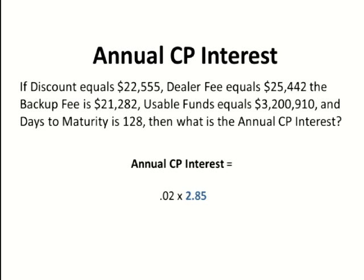We'll combine that to get 2.85, then multiply these two numbers together, and your annual commercial paper interest rate is 6.2%. That is the percentage based on the fees you're going to pay and the amount you're going to receive for the time period you're going to receive it.